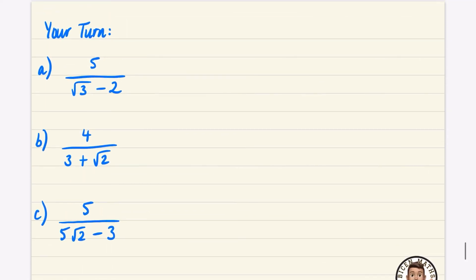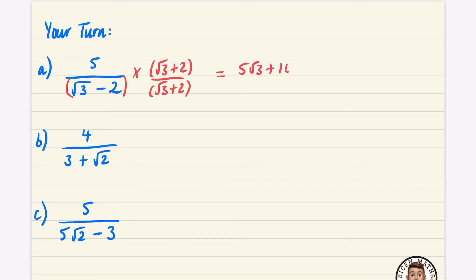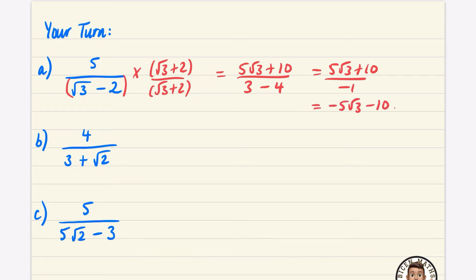Going through these solutions a bit faster. For the first one I'm multiplying by root three plus two on both top and bottom. The numerator gives five root three plus ten. The denominator: root three times root three is three, and minus two times two is minus four, so it's three minus four which is minus one. That gives five root three plus ten over minus one, which means the answer is minus five root three minus ten.